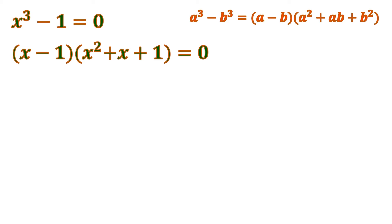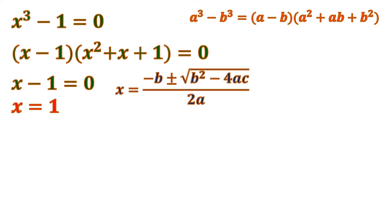We can get the value of x using the (x minus 1) factor: x minus 1 equals 0, which gives x equals 1. That's one value of x that makes x cubed minus 1 equal to 0. Now for the trinomial, we need to use the quadratic formula, because x squared plus x plus 1 is not factorable. We need the quadratic formula to find the roots of this expression.